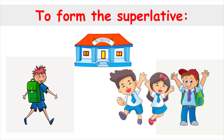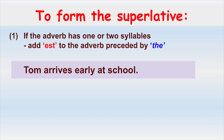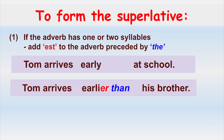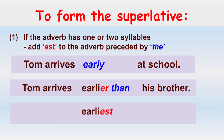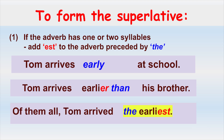To form the superlative adverb, two rules also apply. Rule number one: if the adverb has one or two syllables, we add -EST to the adverb preceded by 'the.' The adverb 'early' is in the positive form — we added -ER to form the comparative, and now we add -EST preceded by 'the' to form the superlative. Our sentence is now: of them all, Tom arrived the earliest.